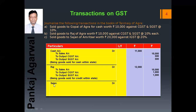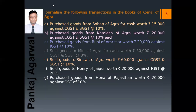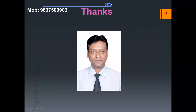Now sold goods to Sajan of Amritsar worth ₹20,000 against IGST at the rate 20%. The entry will be: Sajan debit, to Sales Account, to Output IGST. First write the amount in front of Sales, that is ₹20,000, and calculate 20% of ₹20,000, which comes to ₹4,000 for IGST. Together it is ₹24,000. The narration is: being goods sold on credit outside the state. So this is all for this class. Just pause your screen, copy the questions, and try to do them by yourself. Thank you and have a nice day.